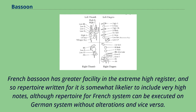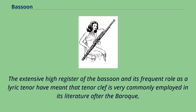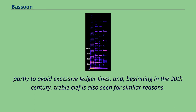French bassoon has greater facility in the extreme high register, and so repertoire written for it is somewhat likelier to include very high notes, although repertoire for the French system can be executed on the German system without alterations and vice versa. The extensive high register of the bassoon and its frequent role as a lyric tenor have meant that tenor clef is very commonly employed in its literature after the Baroque, partly to avoid excessive ledger lines; beginning in the 20th century, treble clef is also seen for similar reasons.